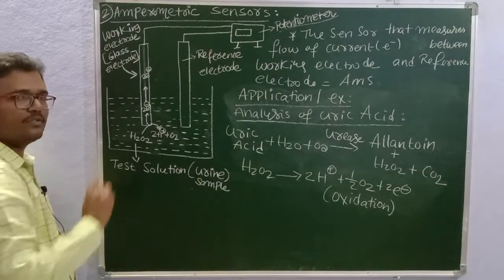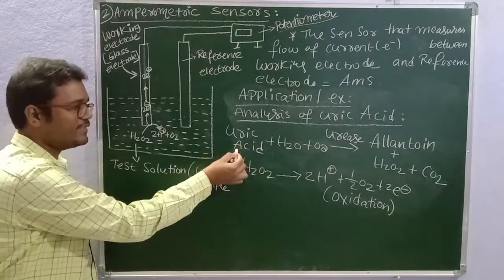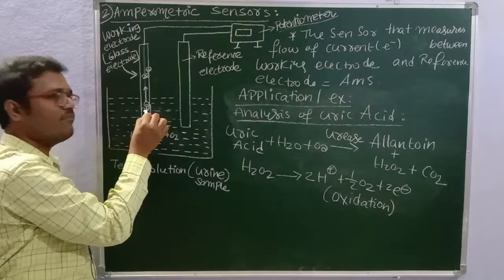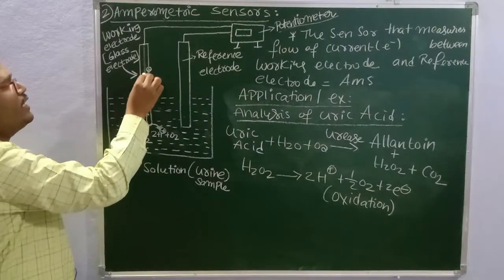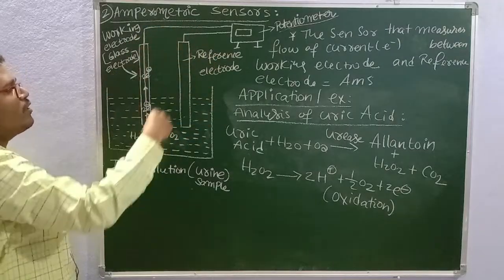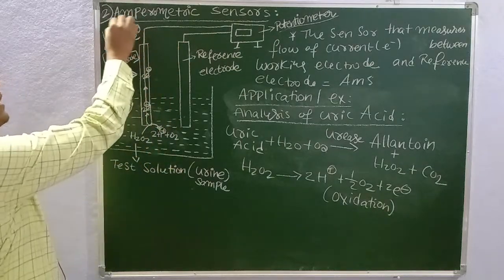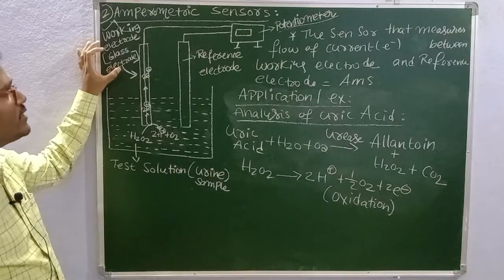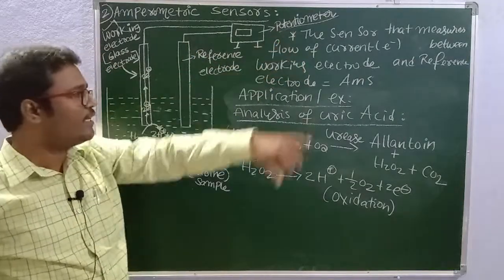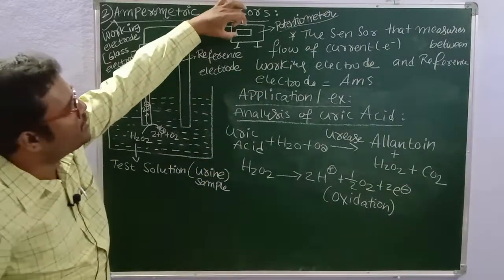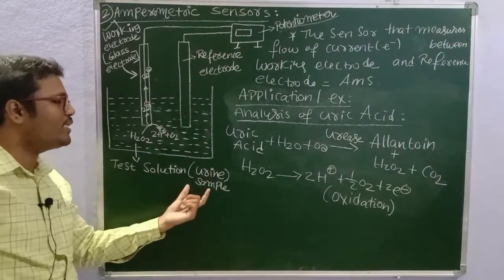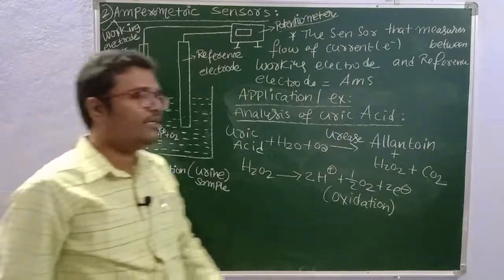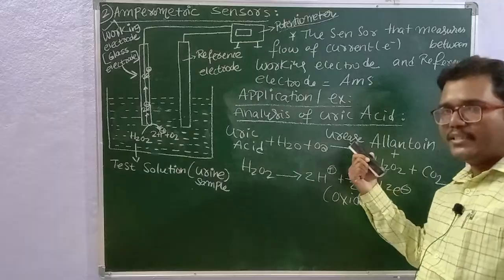In the test solution — the urine sample — the uric acid generates hydrogen peroxide. This hydrogen peroxide reaches the working electrode. At the same time, two electrons are released; these electrons flow from the working electrode to the reference electrode. This electron movement, this current flow, changes the potential of the working electrode. The changed electrode potential is shown on the display, indicating the quantity of uric acid present in the urine sample.